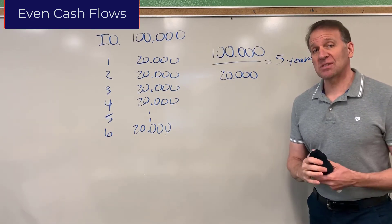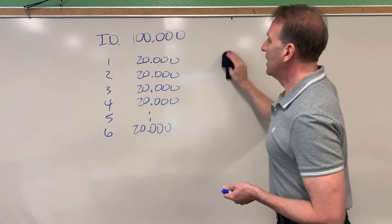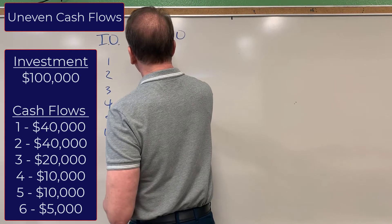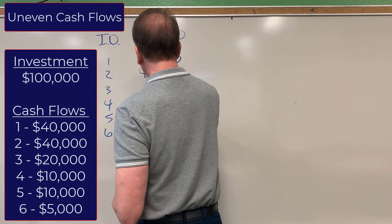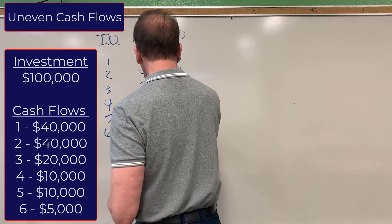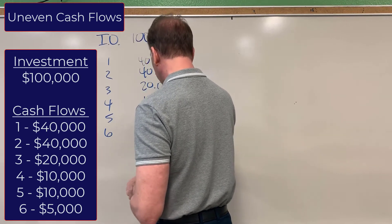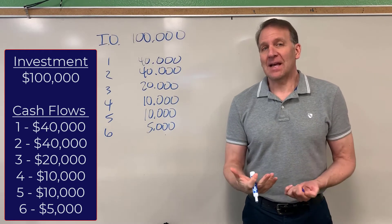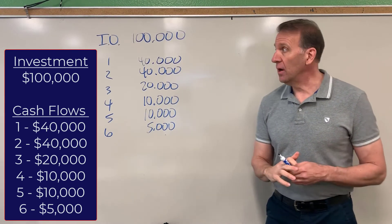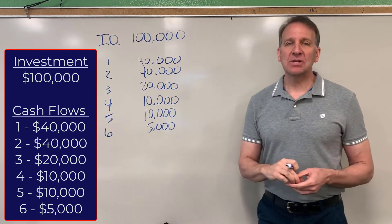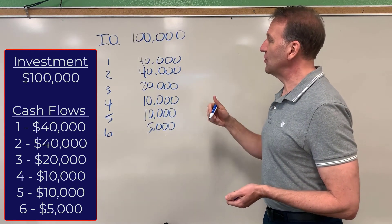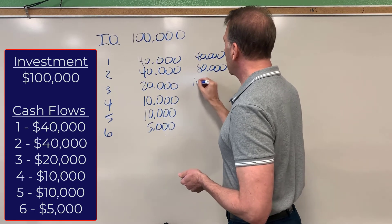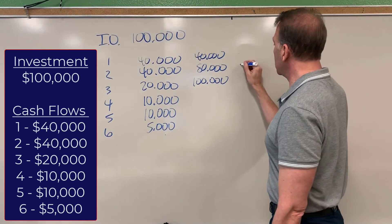Now let's change our example slightly to look at uneven cash flows. The initial investment is still $100,000, but our cash flows are going to be $40,000 in year one, $40,000 in year two, $20,000 in year three, $10,000 in year four, $10,000 in year five, and $5,000 in year six. With uneven cash flows, that simple division equation doesn't work anymore, so the easiest way is to start adding up the dollar amounts to reach $100,000. In year one you have $40,000; by year two you're up to $80,000; and by year three you're up to $100,000. So the payback period is three years.